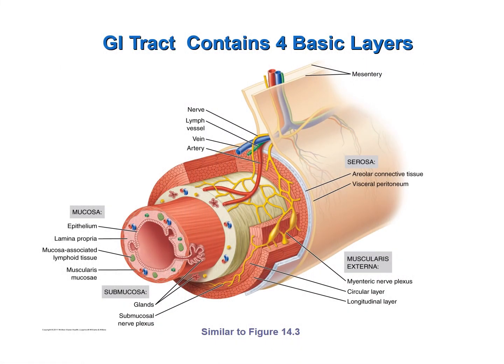With the exception of the oral cavity, the entire gastrointestinal tract is composed of four basic layers or tunics. These are, starting at the lumen and moving outward: the mucosa, the submucosa, the muscularis externa, and the serosa.